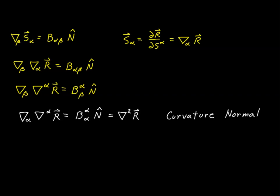What jumps out immediately is that the curvature tensor is related to our position vector by means of a second-order derivative. The first derivative of our position vector tells us about the direction of the curve — it gives us a unit vector tangent to the curve at every point. But the second derivative gives us information about how fast that direction is changing, i.e., the curvature of the curve. So it shouldn't be surprising that the curvature of our surface — expressed by the curvature tensor — is related to our position vector by means of a second-order derivative.